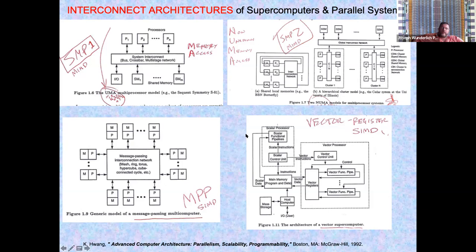We'll cover more detail later in a whole lecture on these architectures, including static and dynamic interconnect architectures. Here is a uniform memory access, multiple instruction, multiple data shared memory processing scheme with a dynamic interconnect — not a static one. We'll talk about the bus, the crossbar, and the multistage, which are all dynamic.